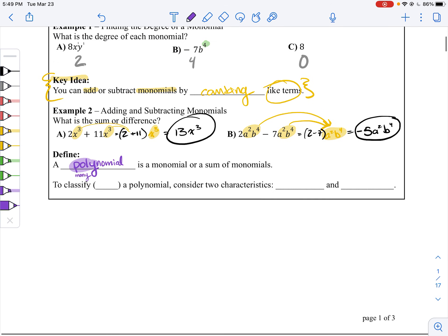So polynomial is a monomial or a sum of monomials. It's a sum of monomials, but it can also be just one.